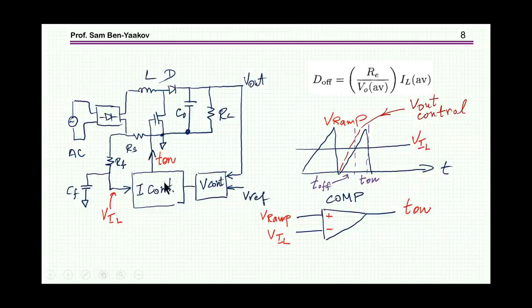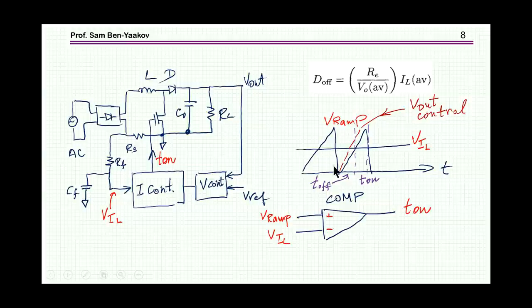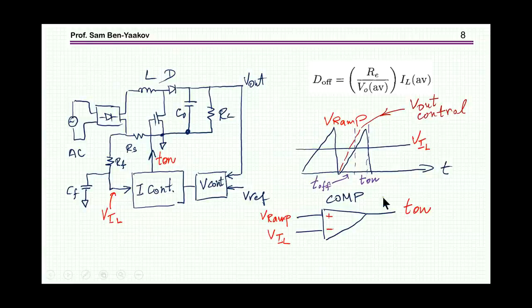The way to do it is the following: we put a sense resistor, here is the current flowing through the sense resistor, we have a low pass filter to get the low frequency component of the inductor current, and then we multiply it by a constant to generate t_on, or t_off — which is the complementary. We can do this with a comparator: we have a ramp and compare this ramp to the average current of the inductor. Whenever the ramp is lower than this current it'll be t_off, and whenever the ramp is higher than the inductor current it'll be t_on. So t_off is proportional to the inductor current.